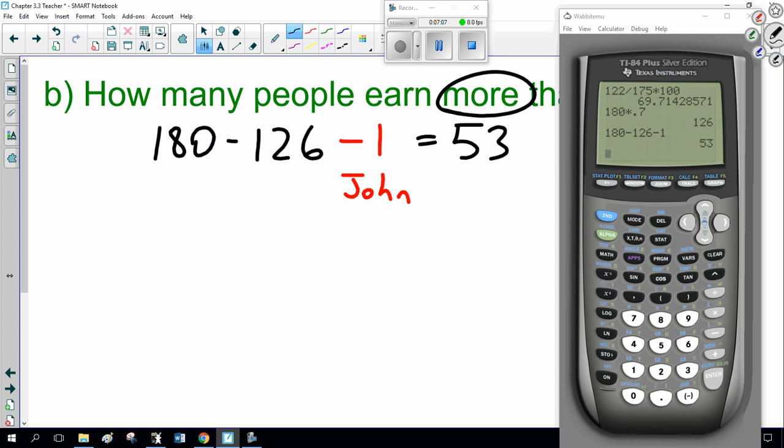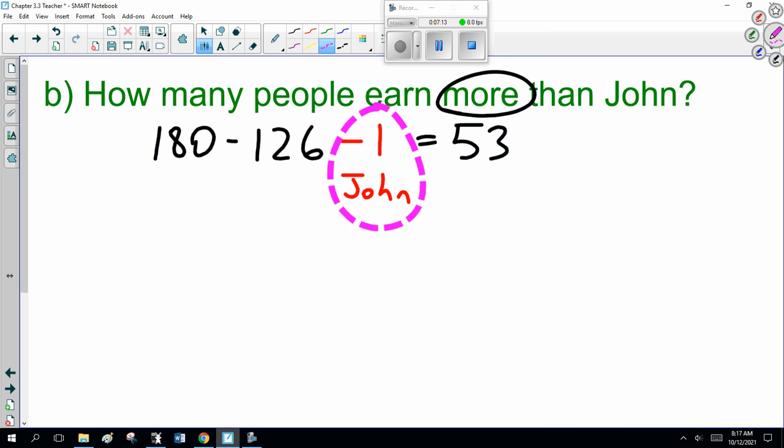Now, be careful. If you don't include John, then the question is wrong. How many people earned more? So, on a test, there would be that 54 if you forgot to subtract John. Alright? So, be careful about that.